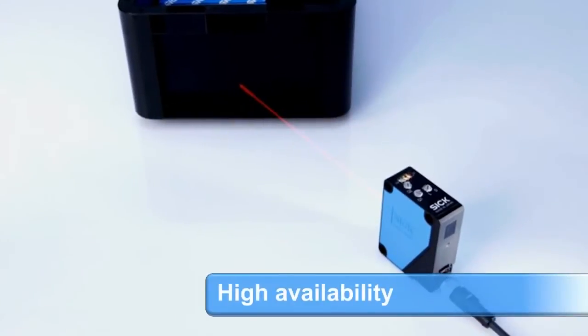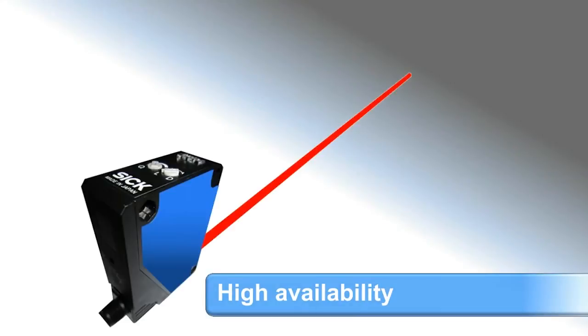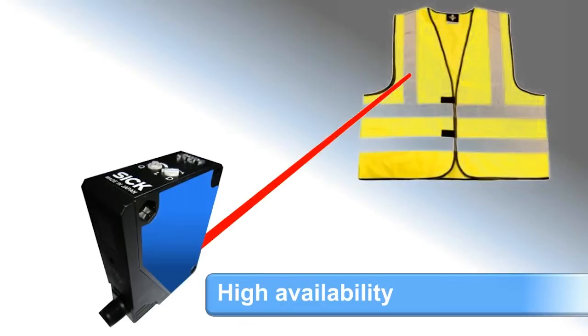Depending on the sensing distance and material, detection is assured even at an angle. The sensor ignores reflections from objects in the background, such as shiny metallic surfaces, windows, or safety vests.